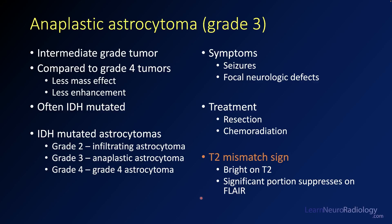This case is an anaplastic astrocytoma — a grade 3 astrocytoma. This is an intermediate grade because IDH-mutated astrocytomas go from grade 2 to grade 4. Grade 2 are the infiltrating astrocytomas, and this anaplastic is in between. Grade 4 IDH-mutated astrocytomas used to be lumped in with glioblastomas but are now referred to as grade 4 IDH-mutated astrocytomas.